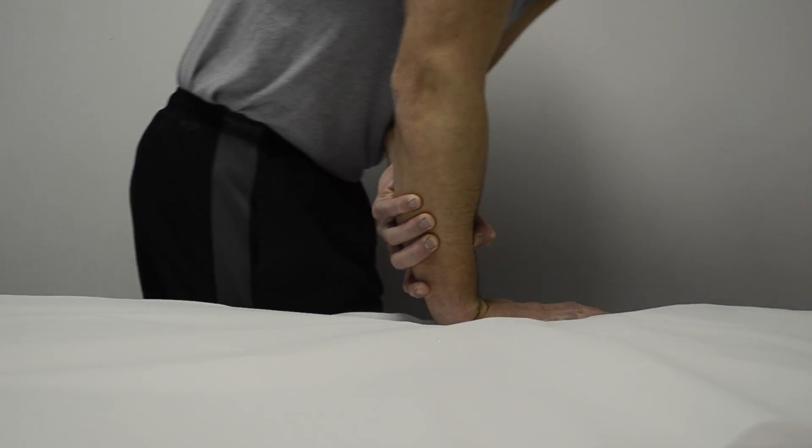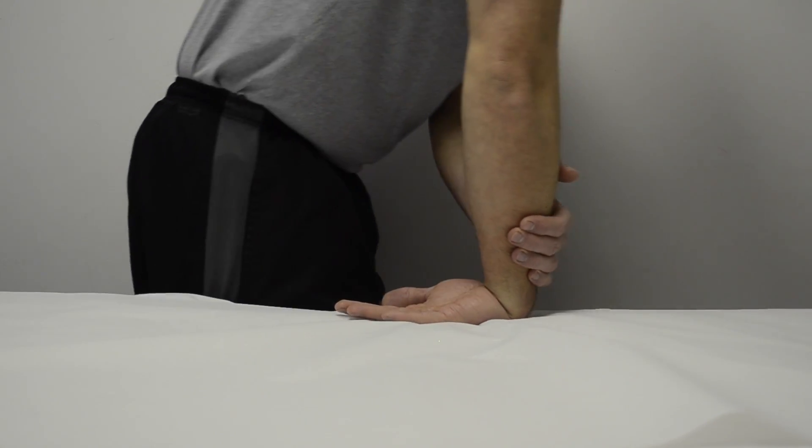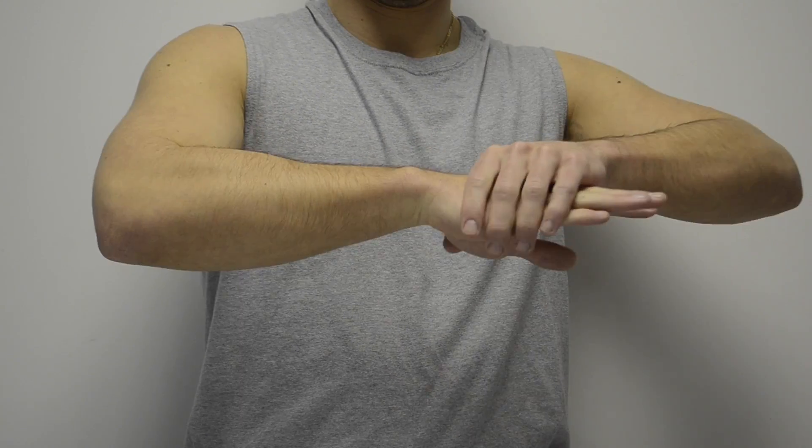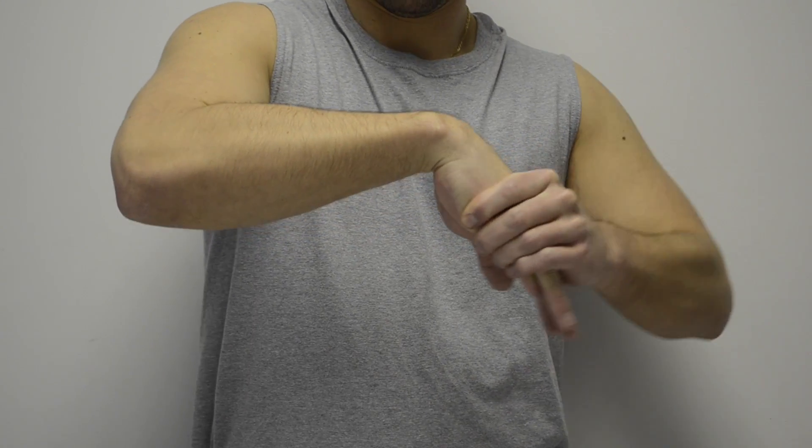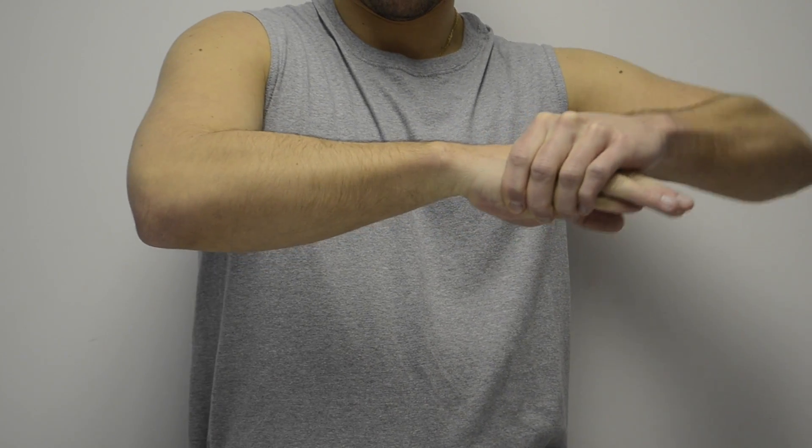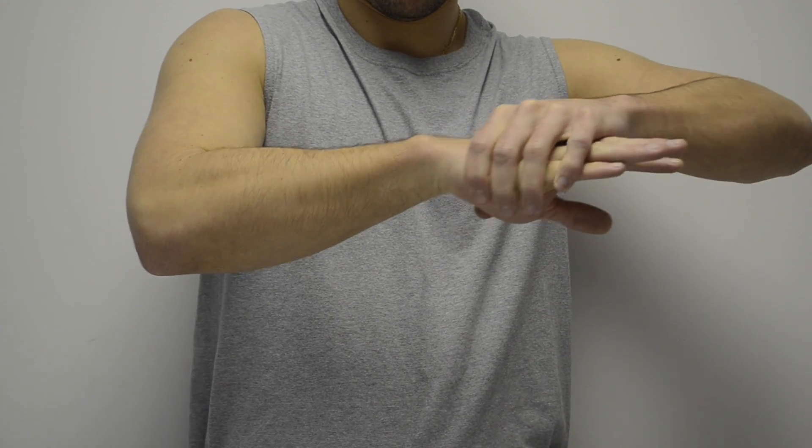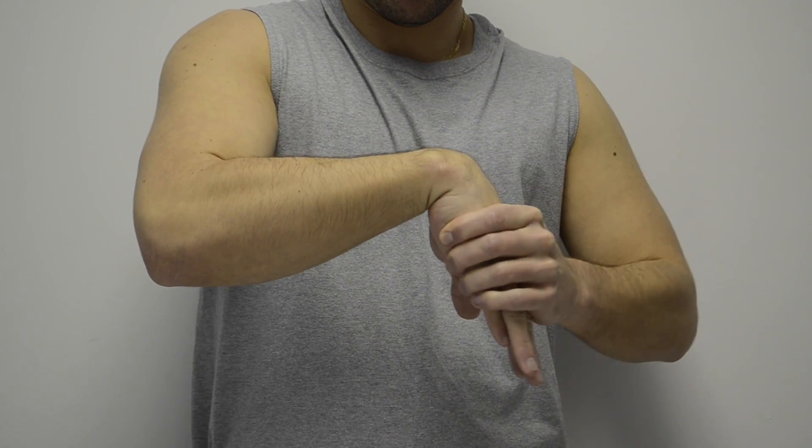Because wrist extension worsened the patient's symptoms, the opposite direction of wrist flexion was tested in loaded, unloaded, and with traction. Flexion with traction abolished end-range flexion pain, restored extension range of motion to normal limits, and abolished pain with a handstand push-up, confirming derangement with a directional preference of flexion with traction.